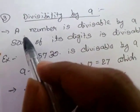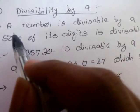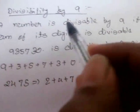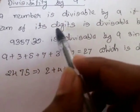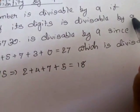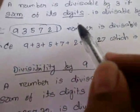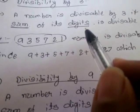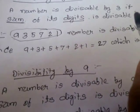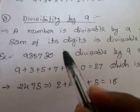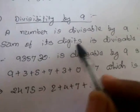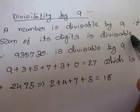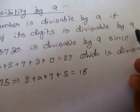The third rule is divisibility by 9. The rule says a number is divisible by 9 if the sum of its digits is divisible by 9. It's similar to the rule for 3, except now we check if the sum of digits is divisible by 9.